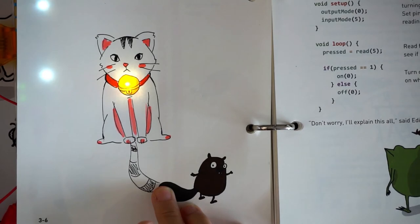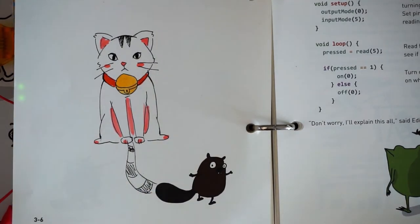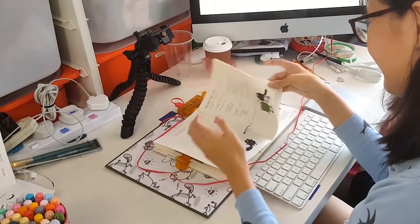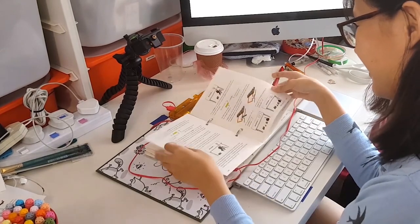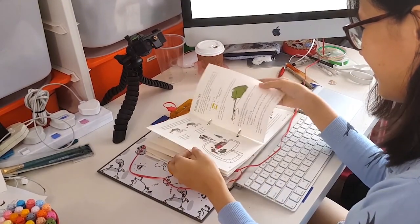We can combine what we learned in Chapter 2 with our switch example to make the cat's bell blink instead of just lighting up. Turn to page 3-14 to see our modifications.